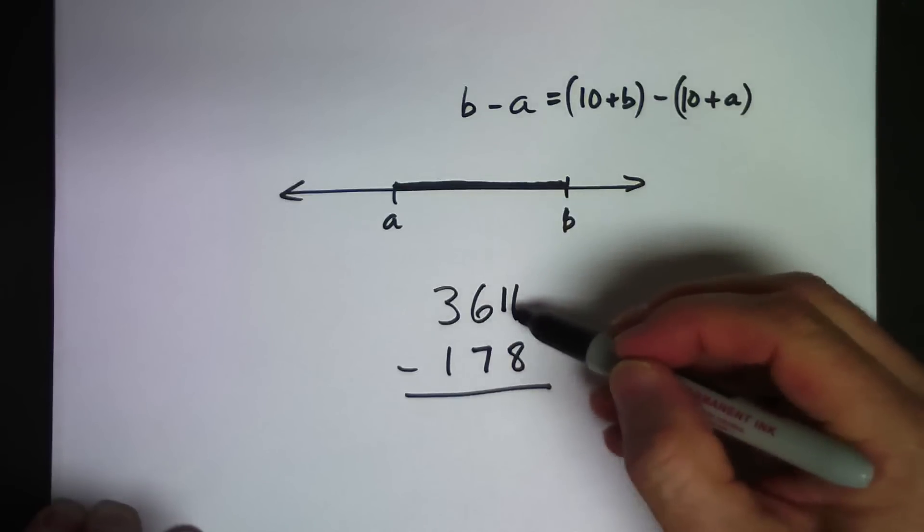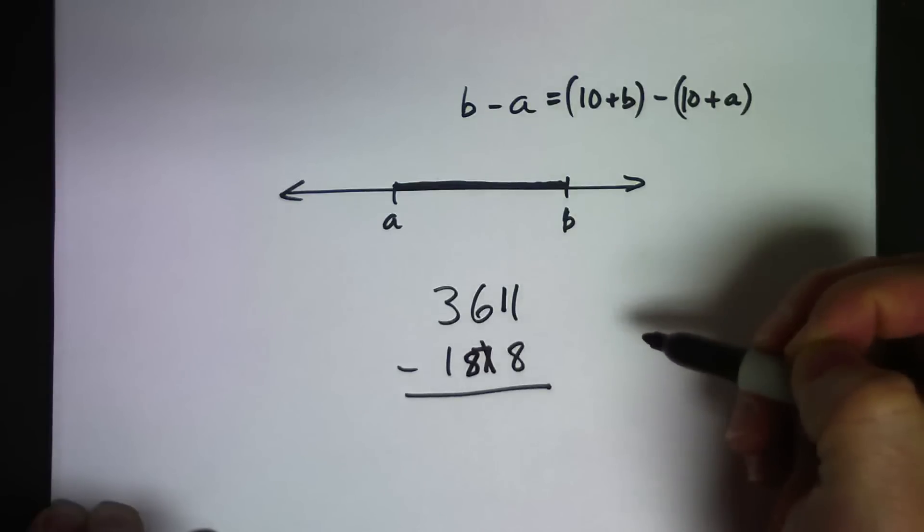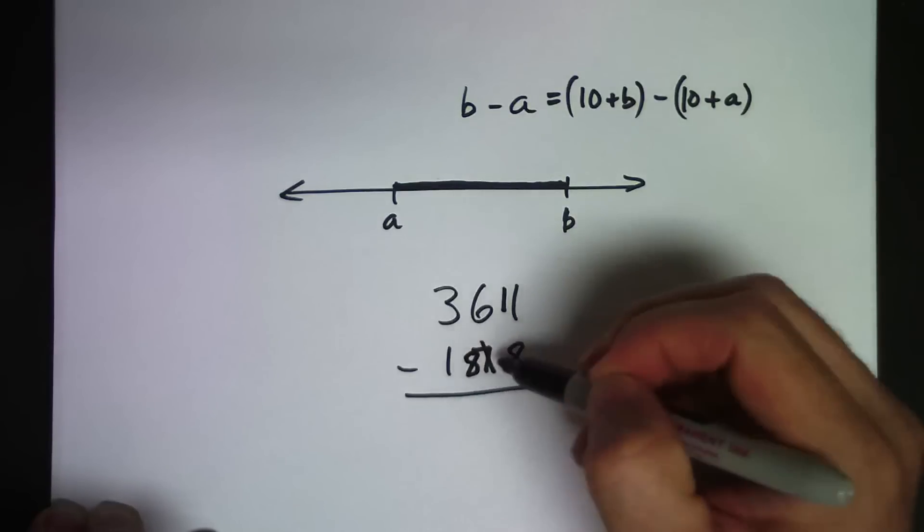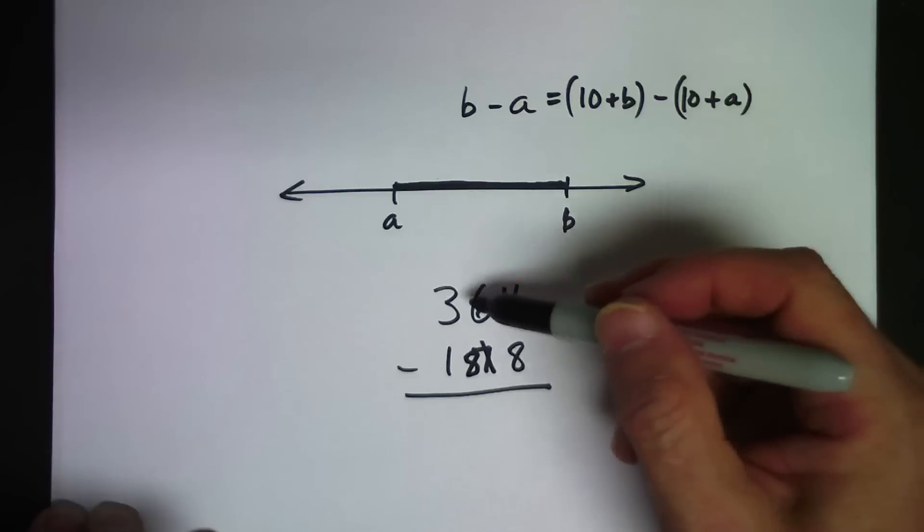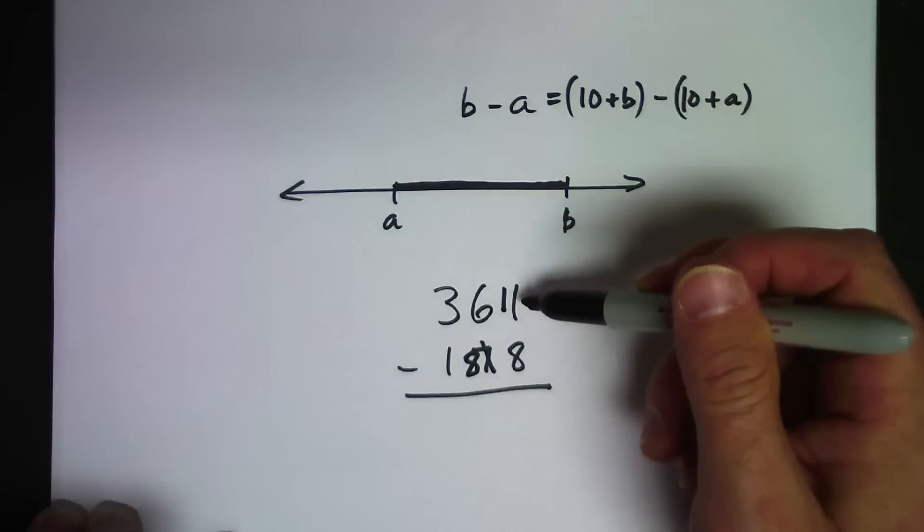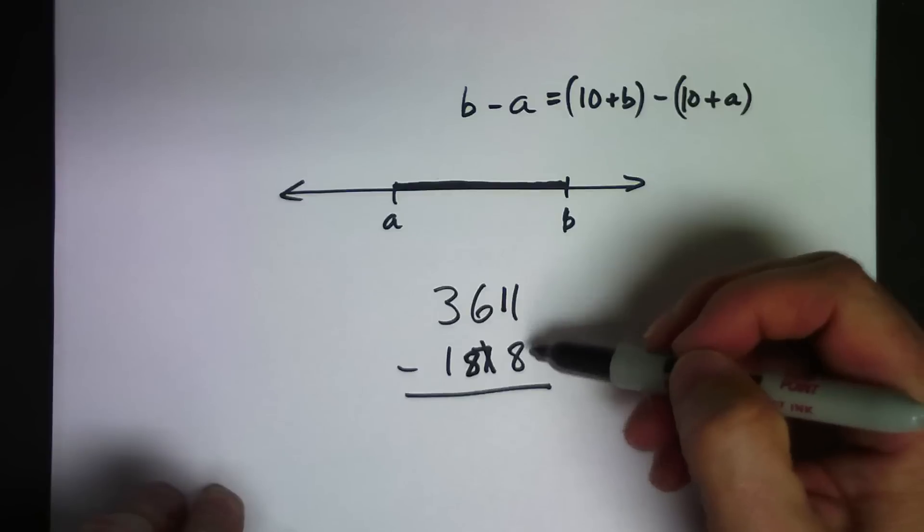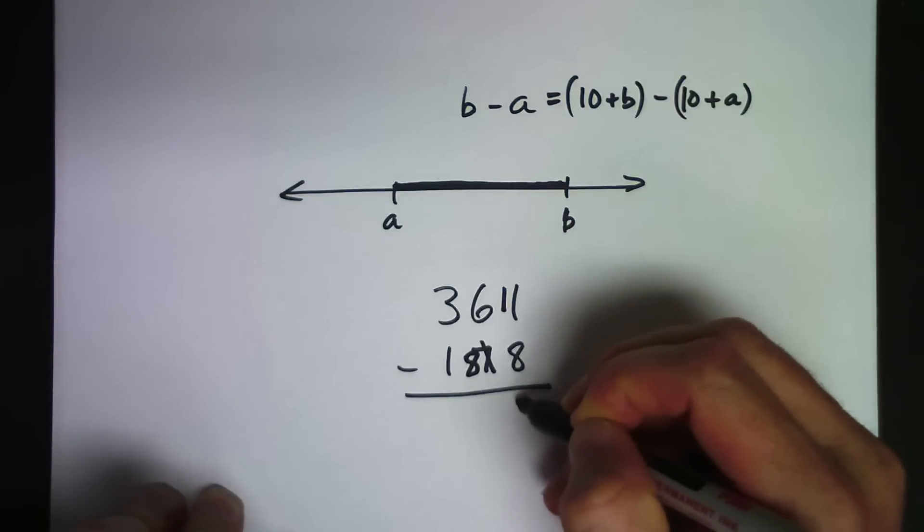So now I have 11 ones, and I can take 8 from 11. Let me go ahead and adjust both numbers. I've added 10 to the top number, so I'm going to add 10 to the bottom number. So that 7 becomes an 8. Notice that 178 plus 10 is 188. Just like 361 plus 10 is 371, but it's also 360 and 11 ones. I'm doing this in a very convenient way because now I have 8 ones to subtract. And when I subtract 8 ones from 11, I end up with 3 ones.